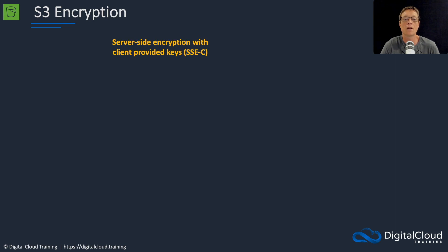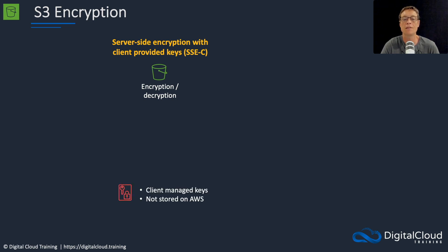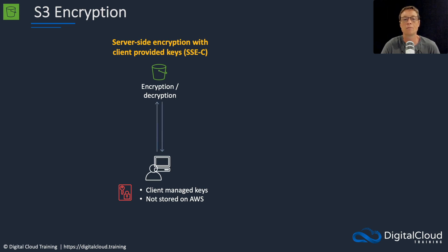You then have server-side encryption with client-provided keys, known as SSE-C. In this case, the encryption and decryption is still happening on the S3 side, but you can use client-managed keys that are not stored on AWS. So you have your own keys, but the encryption and decryption process takes place on the AWS side.